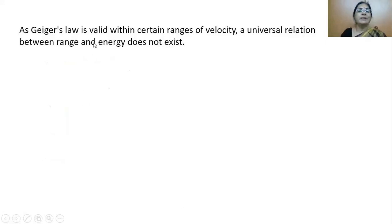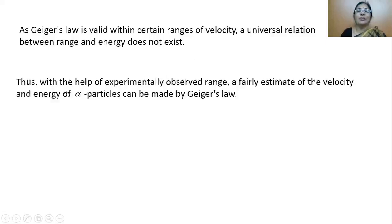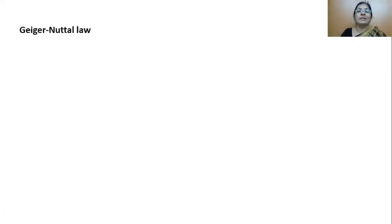As Geiger's law is valid only within certain ranges of velocity, a universal relation between range and energy does not exist. Thus, with the help of experimental observations, Geiger has given a fairly suitable empirical relation connecting range and energy.